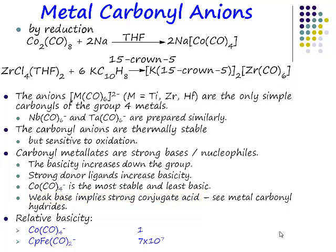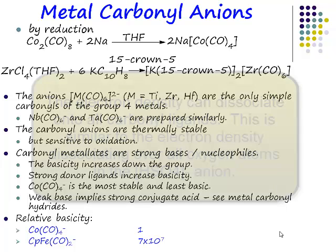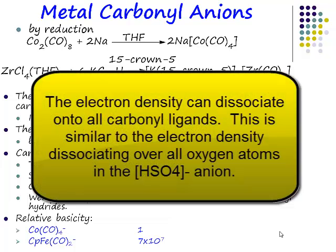What that means is: if we protonate our cobalt tetracarbonyl anion, is the resulting hydride going to be a strong acid or a weak acid? Cobalt tetracarbonyl hydride is going to be a very, very strong acid. The reason is that when that proton dissociates, the negative charge left behind is delocalised and distributed across all of the carbonyl ligands. Because the carbonyl ligands are electron-withdrawing, they delocalise that negative charge.